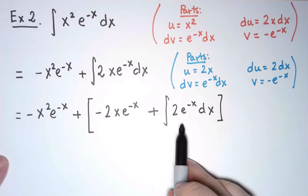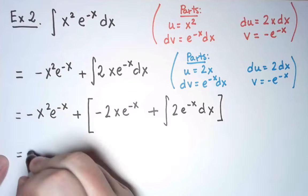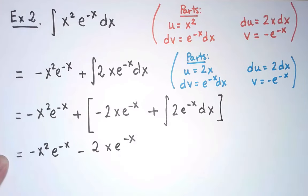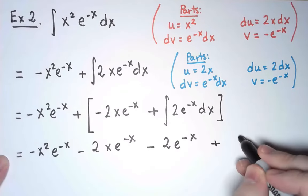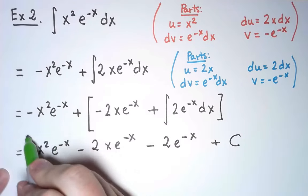Excellent! I finally got it down to an integral I know how to calculate. So I copy all the pieces I already have, and an antiderivative of e to the minus x is simply minus e to the minus x. Don't forget the integration constant!